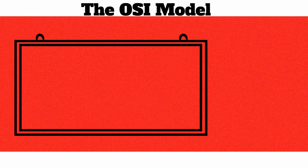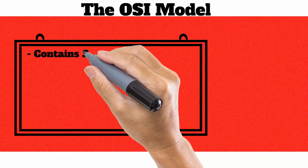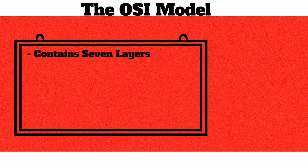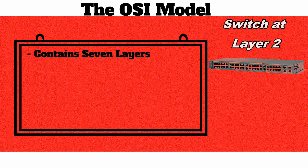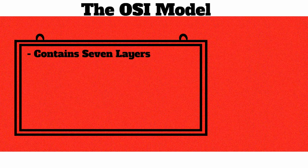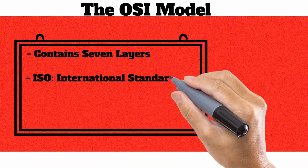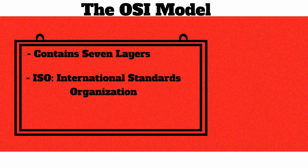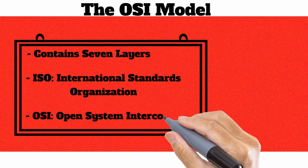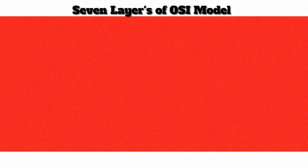The OSI model contains 7 different layers. You might hear that switches live at layer 2 of the OSI model, and that routers live at layer 3. Technically this is the ISO OSI model — ISO being the International Standard Organization — and they define this Open System Interconnect model. This model has 7 different layers.